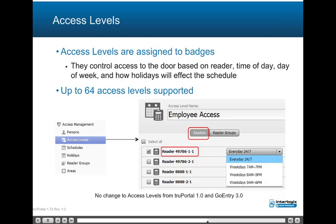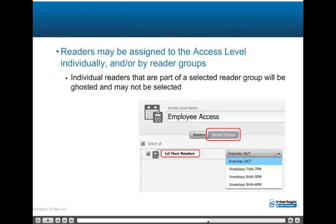Access levels are assigned to badges and control access to the door based on reader, time of day, day of week, and how holidays will affect the schedule. Up to 64 access levels are supported. Readers may be assigned to the access level individually and/or by reader groups. Individual readers that are part of a reader group selected in the access level will be ghosted and may not be selected.